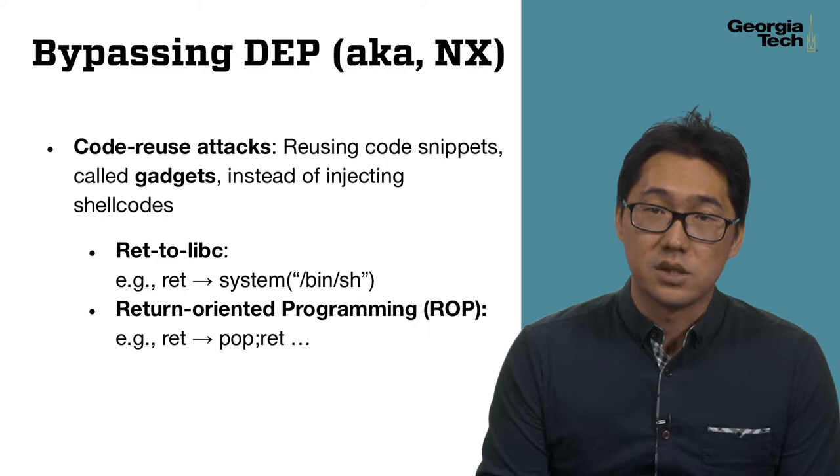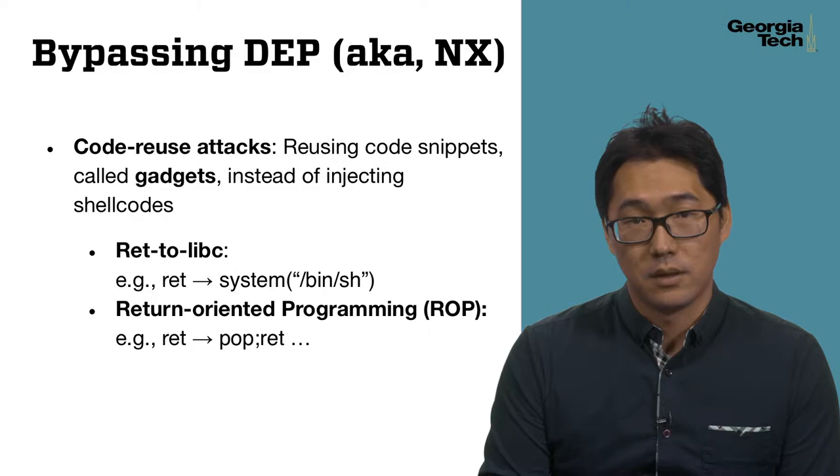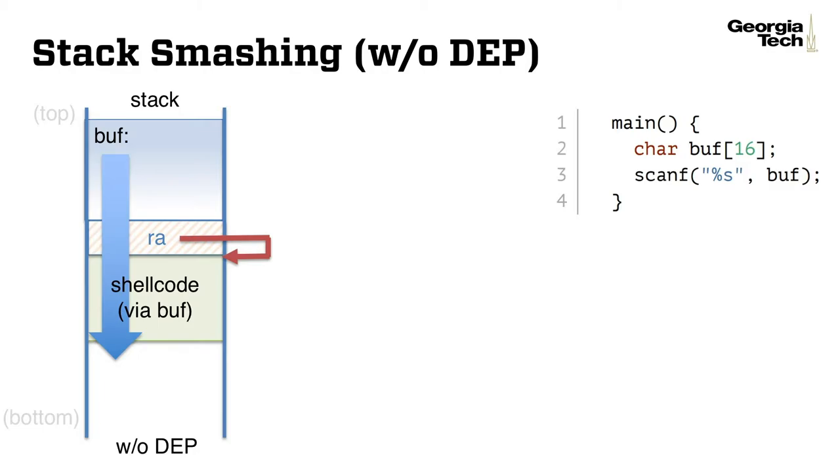Since we cannot directly inject the shellcode payload to the target, we should reuse existing code in the program. There are two popular techniques. First one is return-to-libc, which redirects control flow to a library function such as system. Second technique is return-oriented programming, which can be considered a generalized version of return-to-libc.